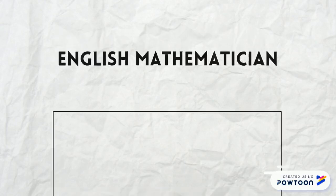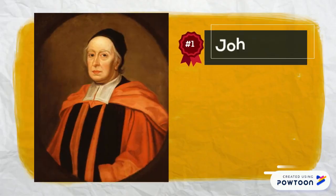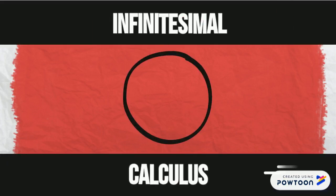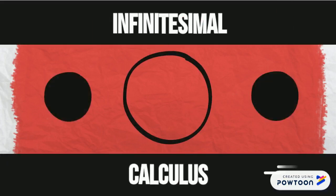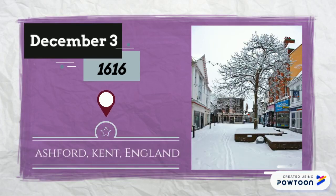Good day everyone! Today we'll talk about an English mathematician named John Wallis. John Wallis is an English clergyman and mathematician known for his partial contribution in infinitesimal calculus. He was born on December 3, 1616 in Ashford, Kent, England.